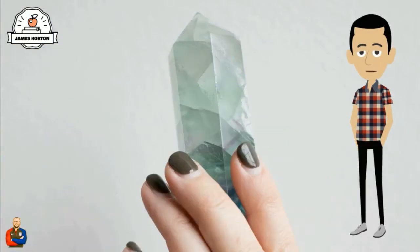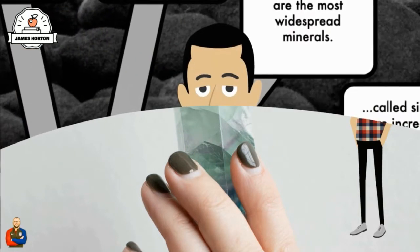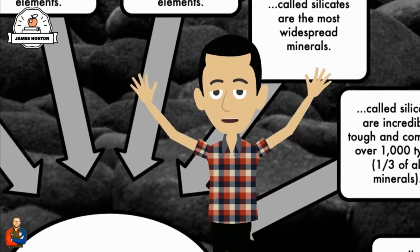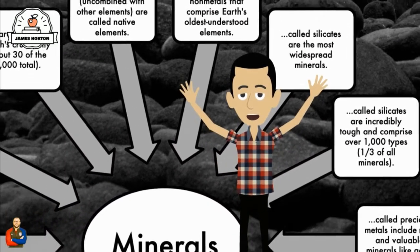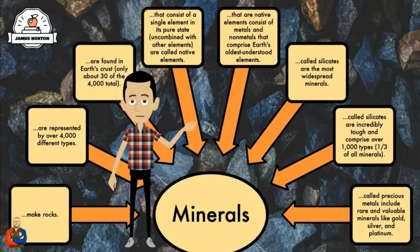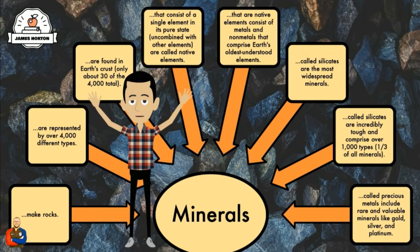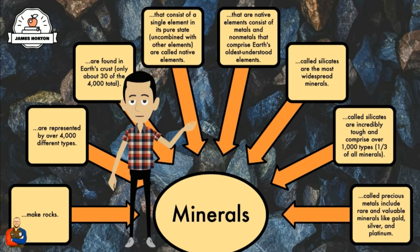Minerals called silicates are the most widespread minerals. They are incredibly tough and comprise over 1,000 types — that's one-third of all the minerals that we know of. Minerals called precious metals include rare and valuable minerals like gold, copper, silver, and platinum.